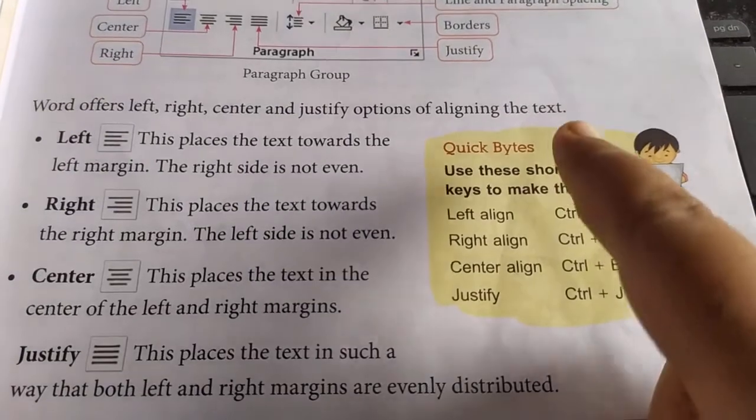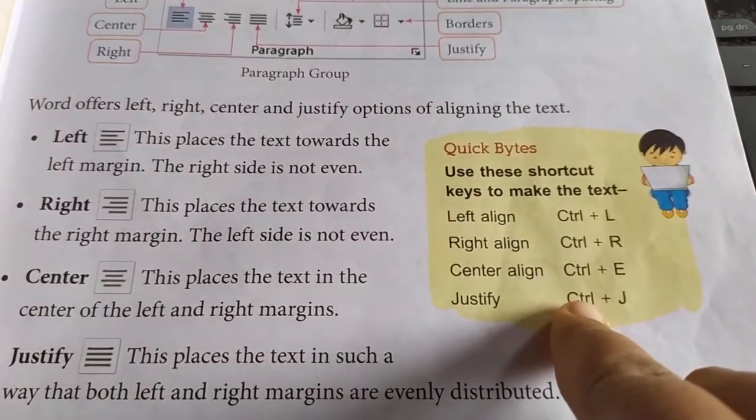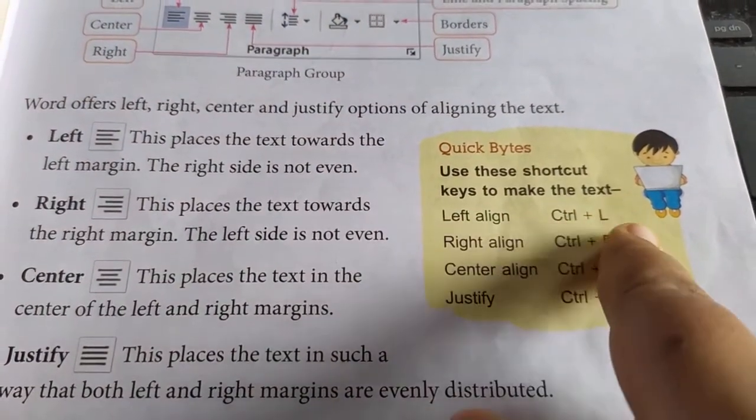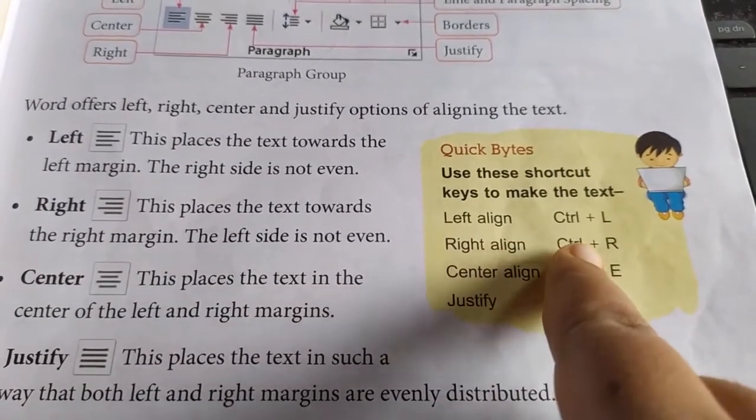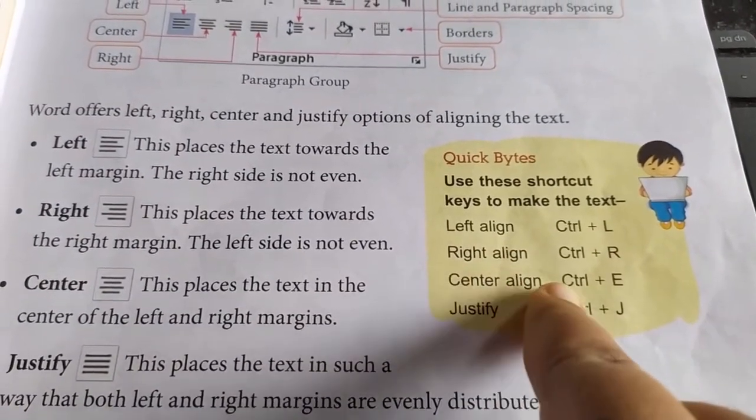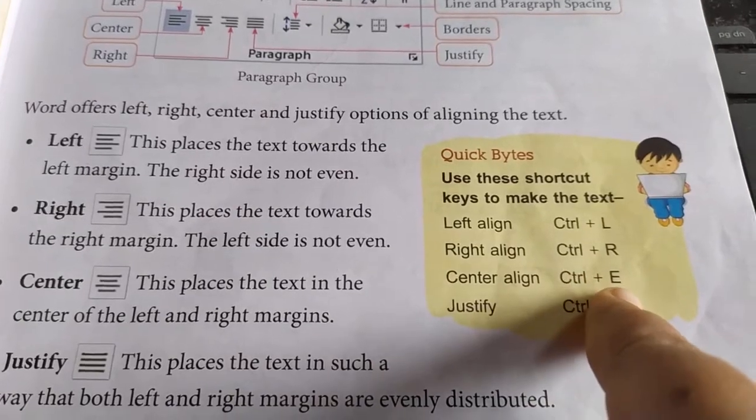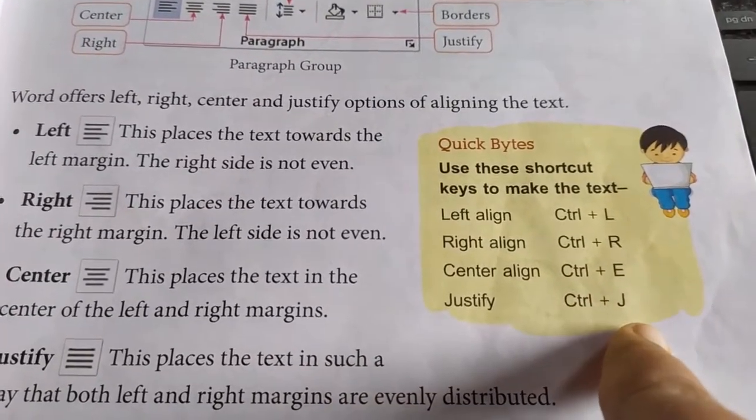Now there are some shortcut keys used for alignment. For left alignment, control plus L, right alignment, control plus R, center alignment, control plus E and justify we have control plus J.